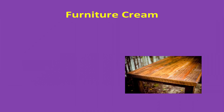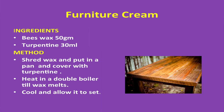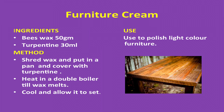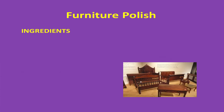Furniture cream — ingredients: beeswax 50 grams, turpentine 30 ml. Method: shred the wax and put it in a pan, cover with turpentine, and heat in a double boiler until the wax melts. Cool and allow it to set. Use: it is used to polish light colored furniture.